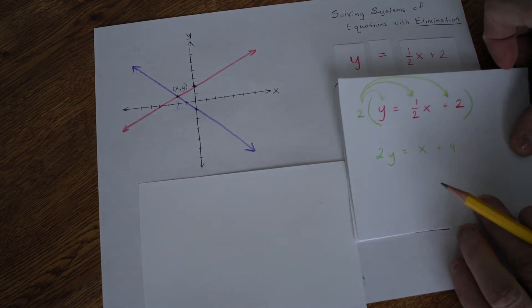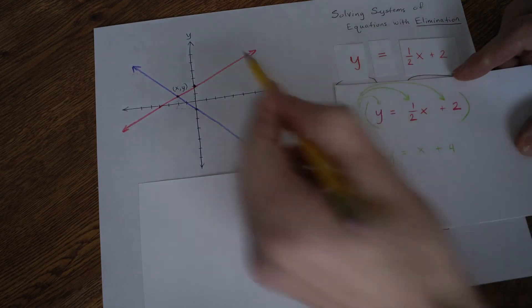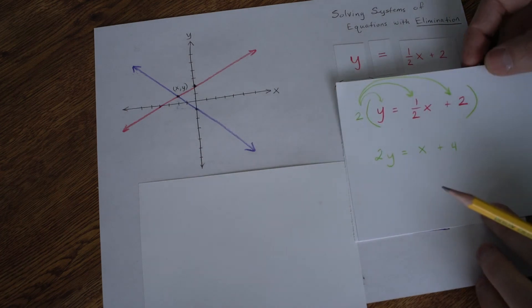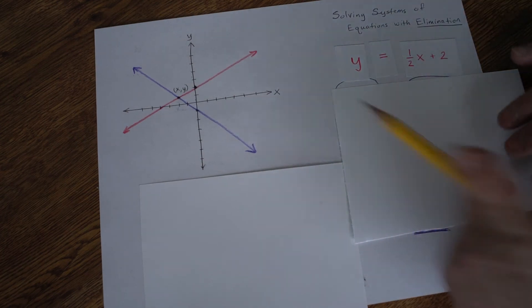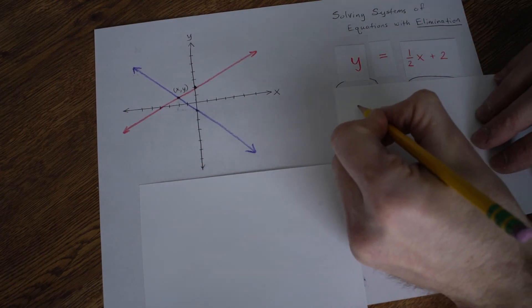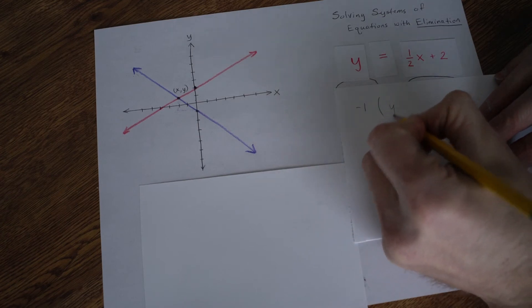So you can multiply an equation by any number. As long as you multiply each piece, it will stay an equivalent form of this red line.